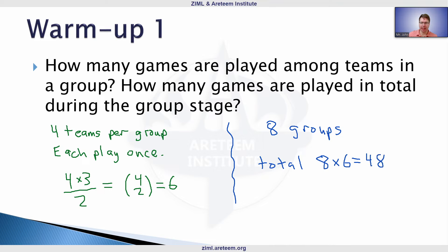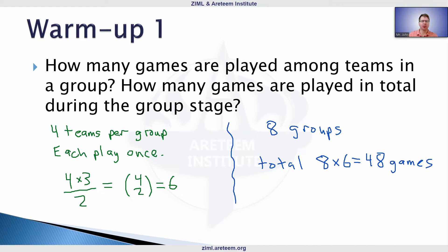So 48 total games — we'll focus more on individual groups. There's no over-counting between groups, so we simply multiply eight times six. That contrasts with counting games within a group, where teams play each other and we needed to divide by two to avoid over-counting.